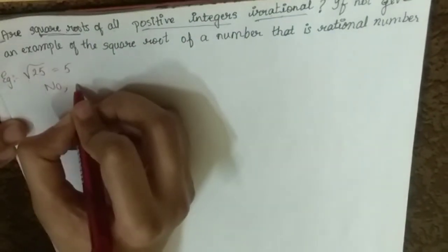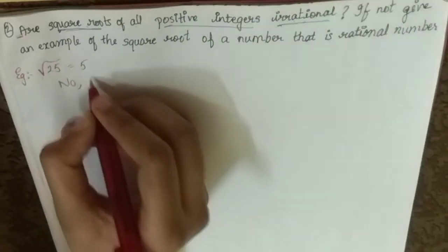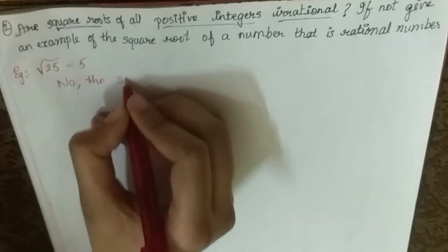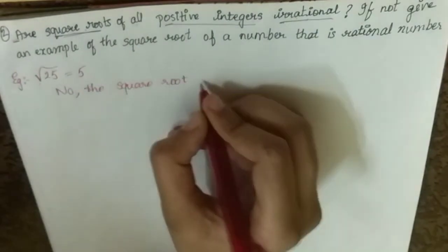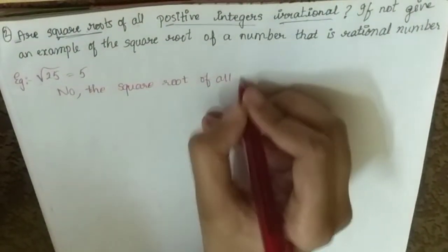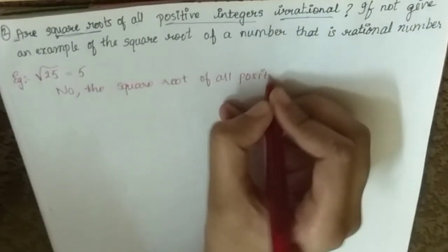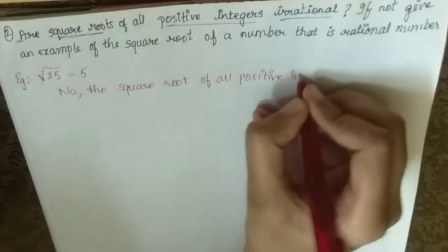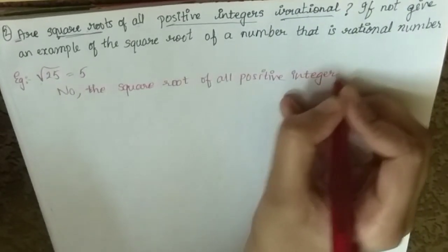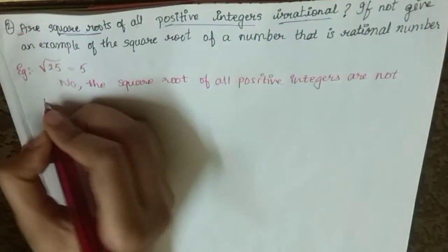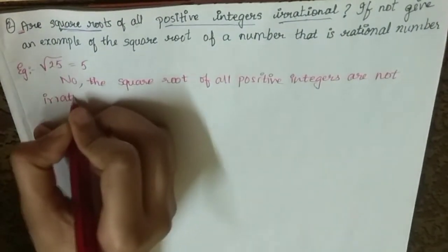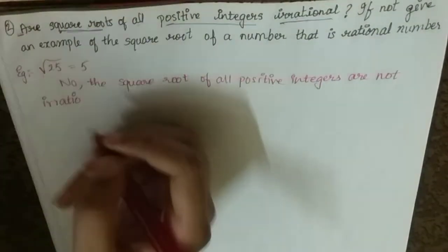No, the square root of all positive integers are not irrational.